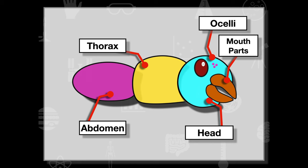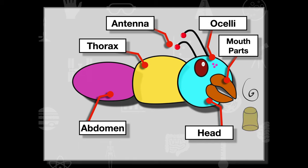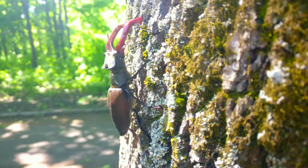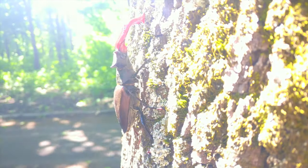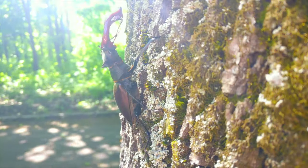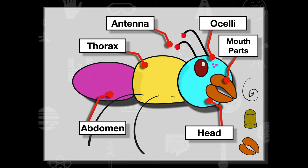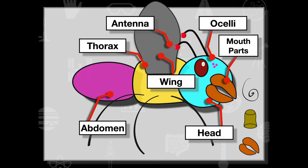We'll also see mouthparts and antennae on these insects. There are different sets of mouthparts — sponges, mandibles, and others — each serving different functions. The legs protrude out of the thorax. On the thorax we may also see wings, which enable the organisms to fly.